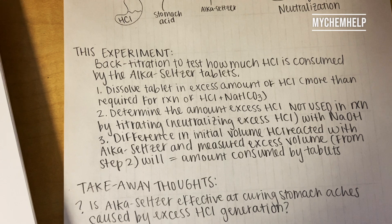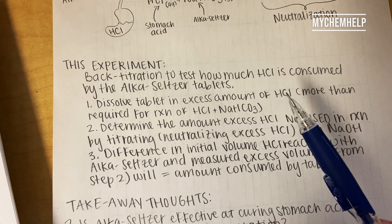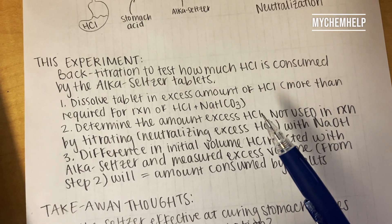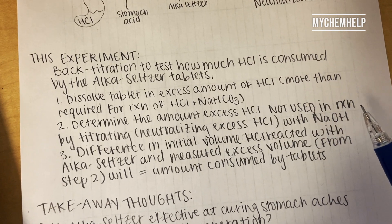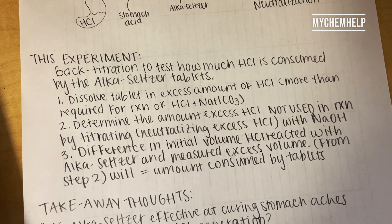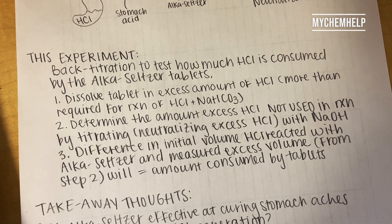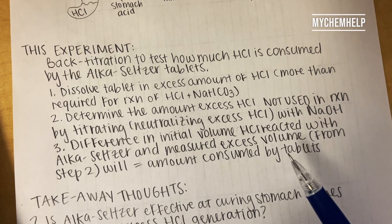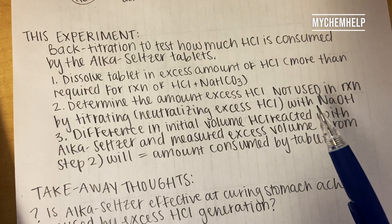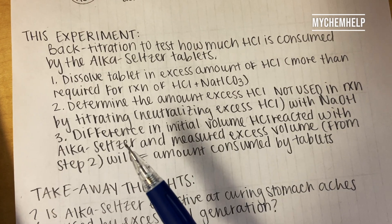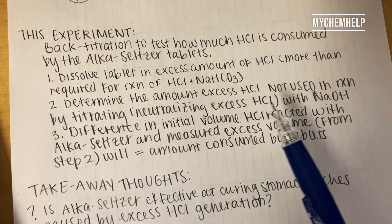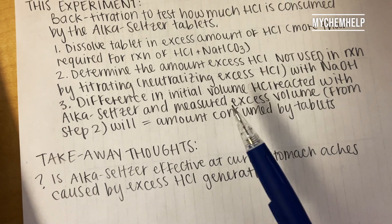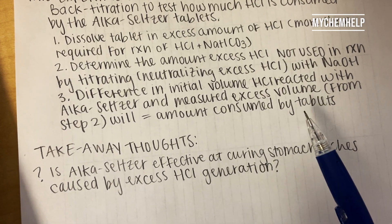In our experiment, we're going to be doing a back titration to test how much HCl is consumed by the Alka-Seltzer tablets. That means we are going to be dissolving the tablet in excess amounts of HCl — more than what is required for the typical reaction. Then we are going to determine the excess amount of HCl not used in the reaction by titrating, basically neutralizing the excess HCl with sodium hydroxide.